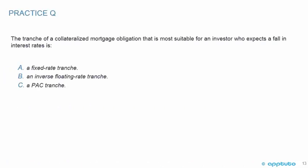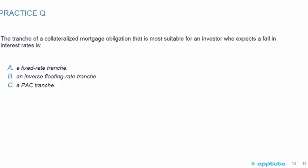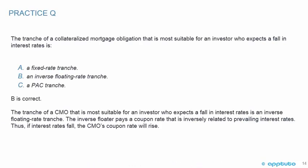Another practice question: The tranche of a collateralized mortgage obligation most suitable for an investor who expects a fall in interest rates is: A. a fixed-rate tranche; B. an inverse floating-rate tranche; or C. a planned tranche. B is correct.